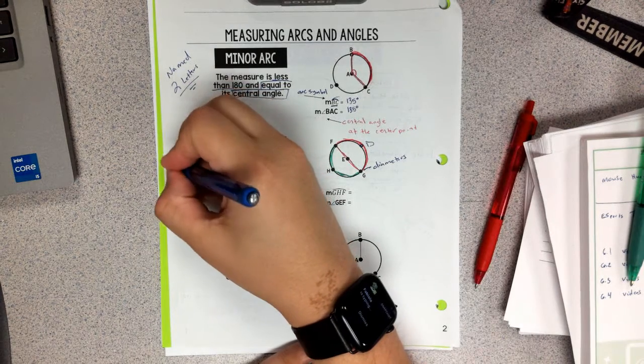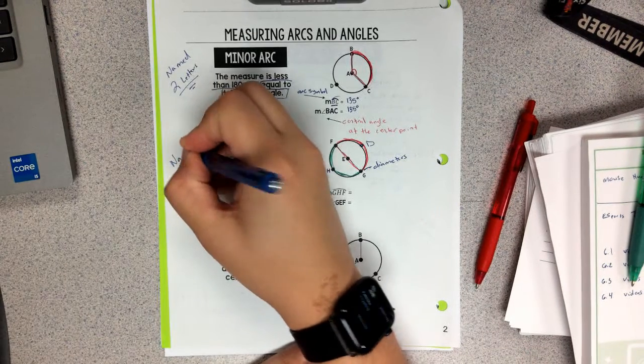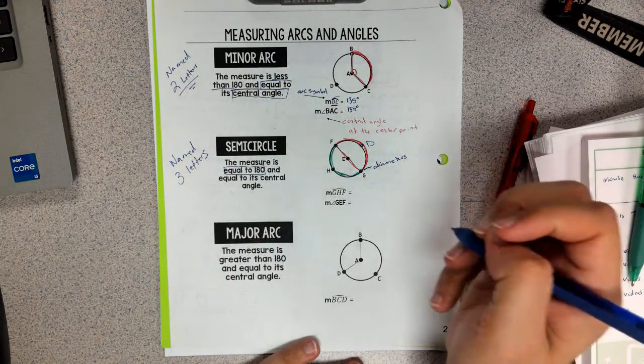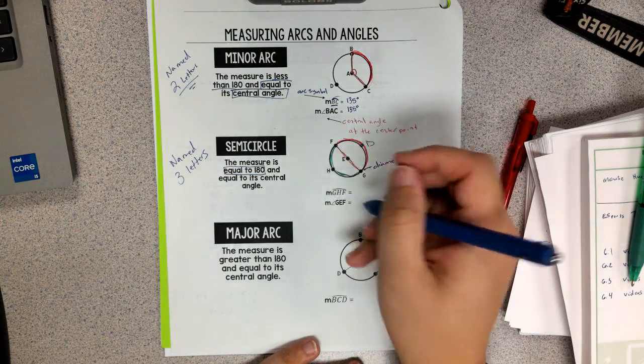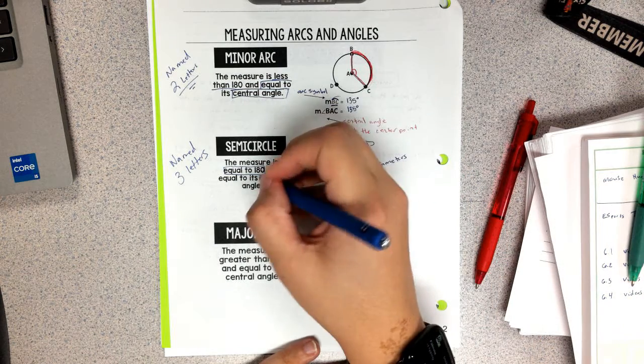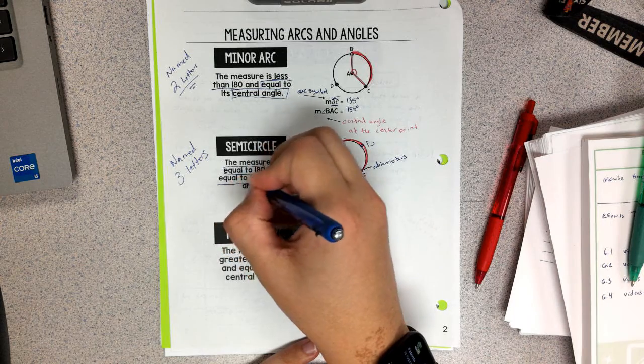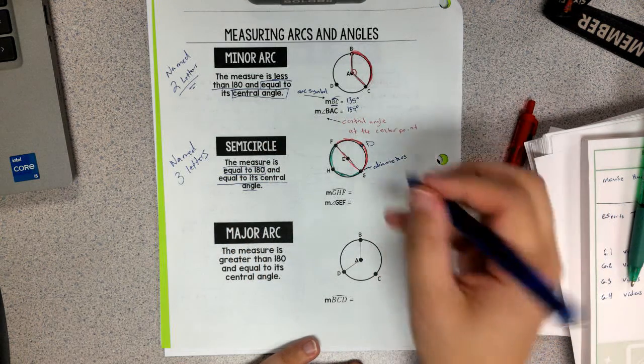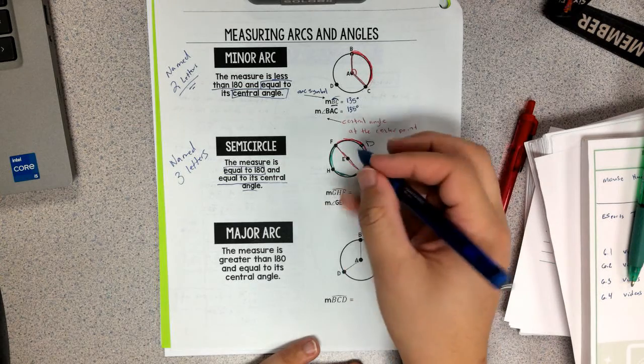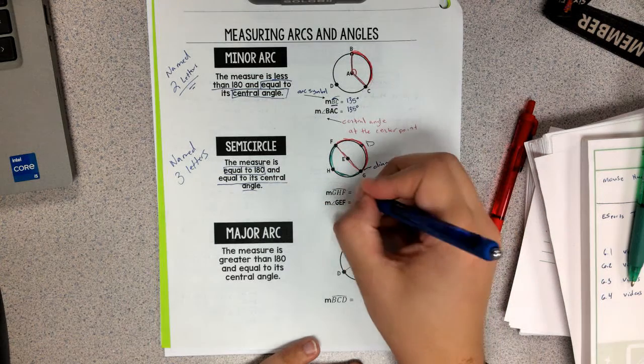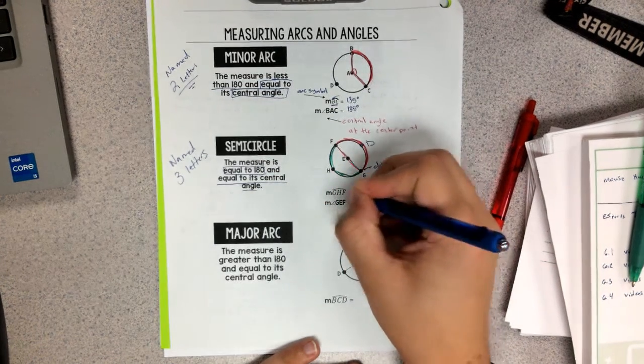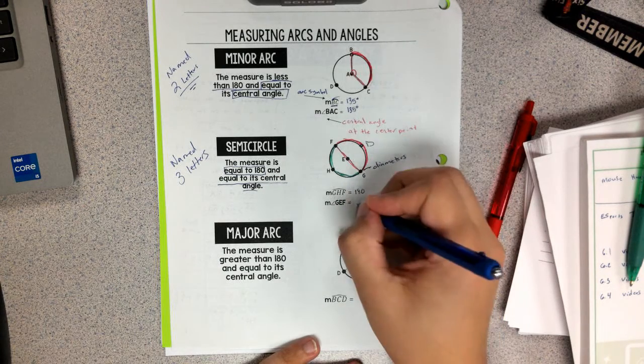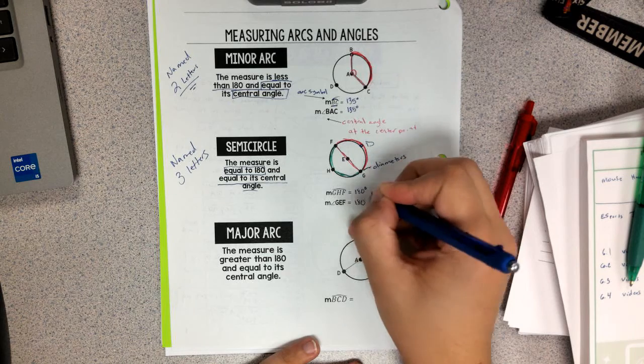Now, semicircles are going to be named with three letters. So the measure of angle, and we need to know that it also is equal to the central angle. So that means that if it's a semicircle and it's equal to 180, both the arc GHF and the angle GEF are going to be 180 degrees.